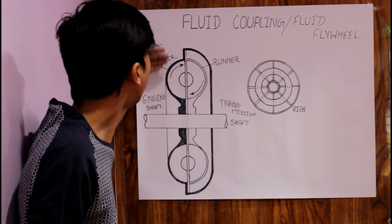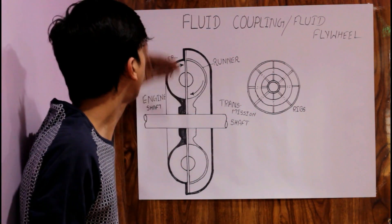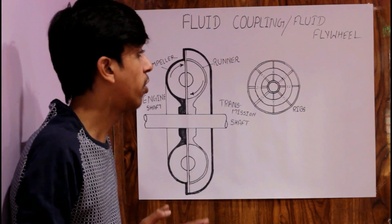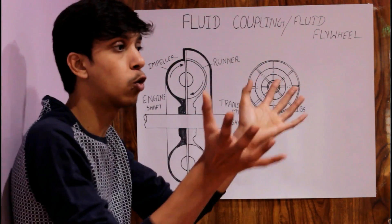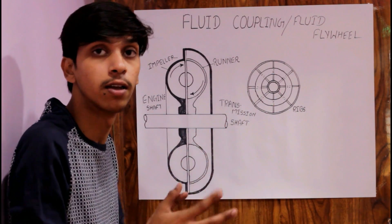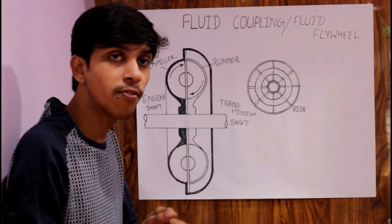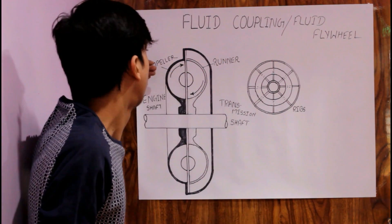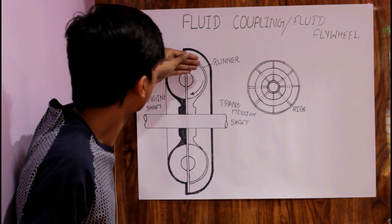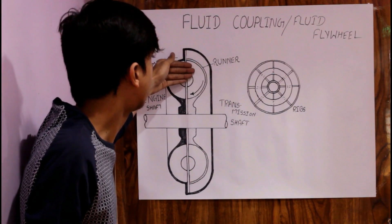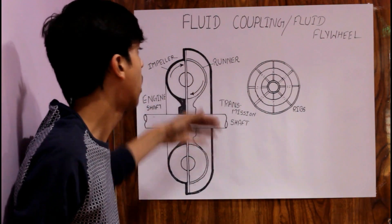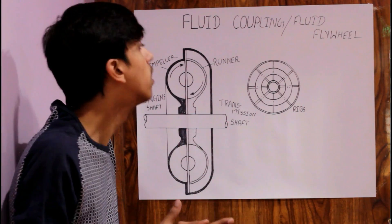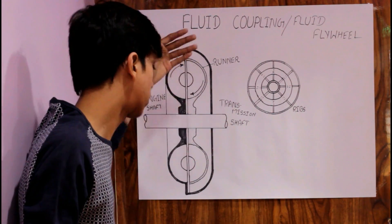Here we have an impeller. When the impeller starts spinning, due to the centrifugal effect, the oil goes outward. Because of that, the oil flows toward the runner and strikes the ribs of the runner. After some time, due to the high viscosity of the fluid, the runner also starts spinning.